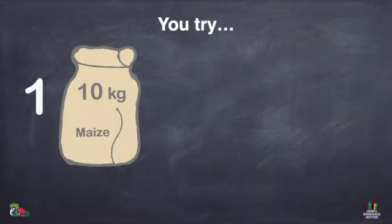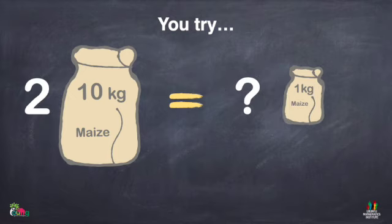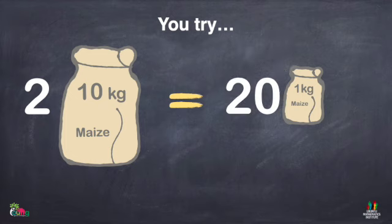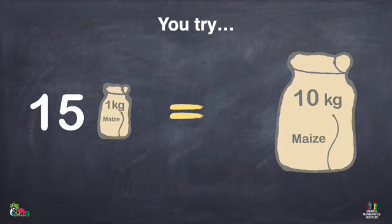Here's some for you to try. If 1 ten kilogram of maize is the same as 10 small bags of 1 kilogram each, how many small bags of 1 kilogram will be equal to 2 ten kilogram bags? You would be correct if you said 20. What if you have 15 one kilogram bags? How many big bags could you exchange that for? Would they be enough to get 2 big 10 kilogram bags?